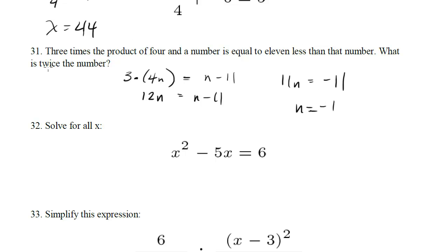Now the question wants to know, what is twice the number? So we want to know 2n, and 2n is going to be equal to negative 2. So our answer is negative 2. Be careful about what they ask you for.